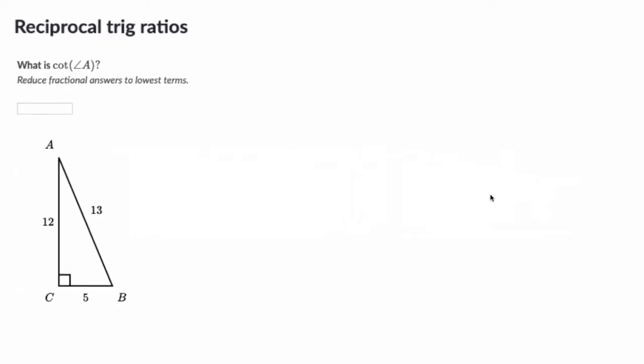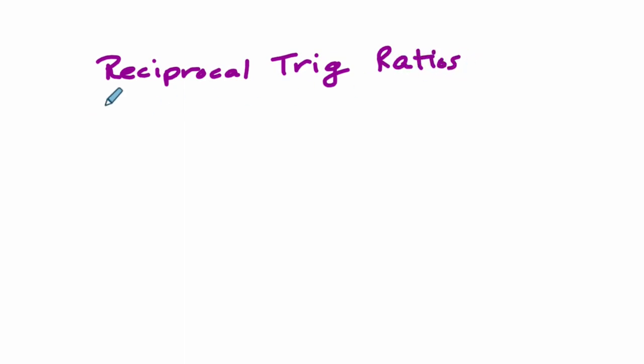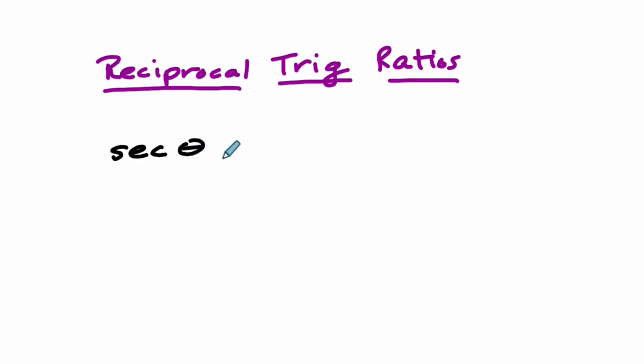So, reciprocal trig ratios — let's just make sure we're clear as to what those really are. What are the reciprocal trig ratios that you're dealing with in general in trig, but also specifically in this exercise set? Let's define them first. The first one is the secant of theta. It is the reciprocal of the cosine, so it equals one over the cosine of theta.